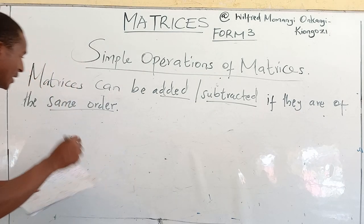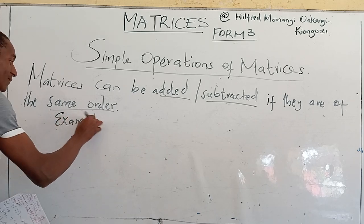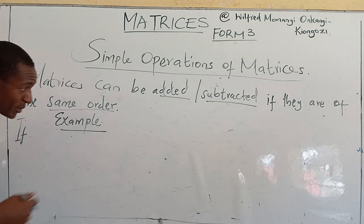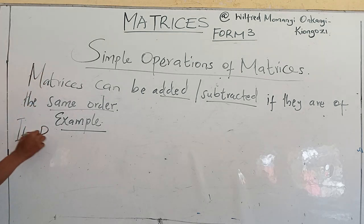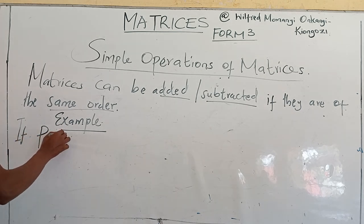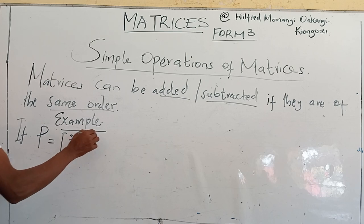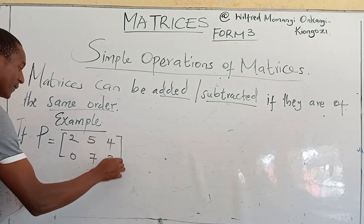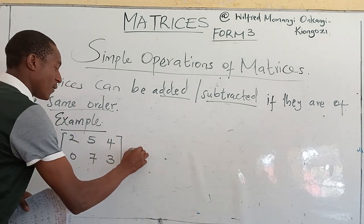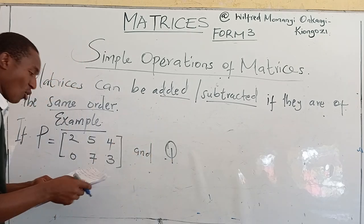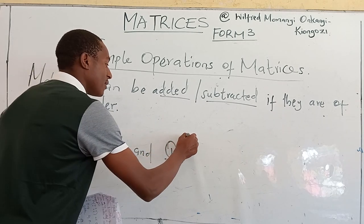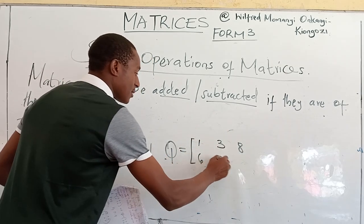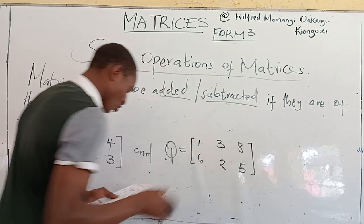We can give an example — the kind of equations you will meet in the exam. If matrix P is equal to [2, 5, 4; 0, 7, 3] and Q is given by [1, 3, 8; 6, 2, 5], these are the two matrices.